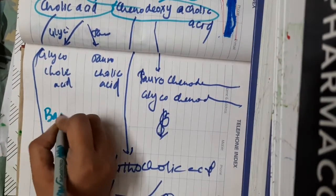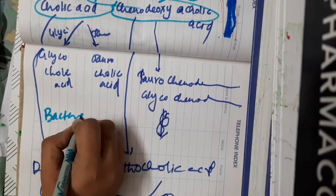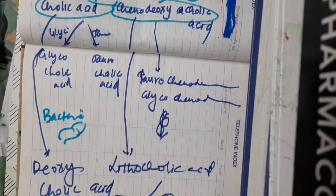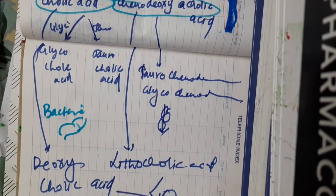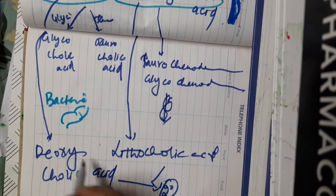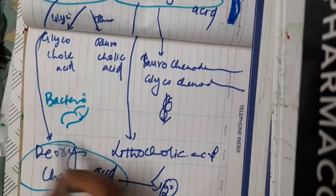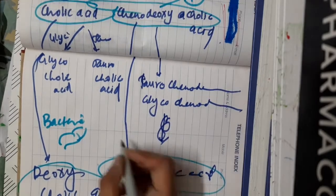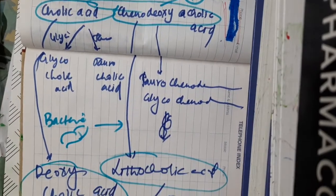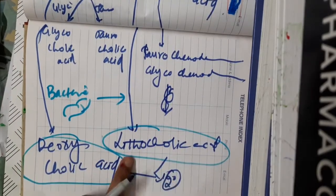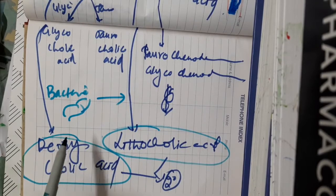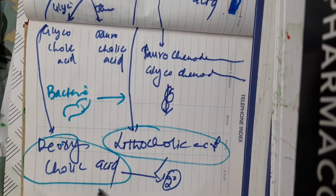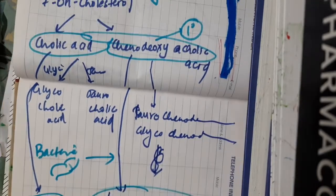Cholic acid in the presence of bacteria in the intestine forms deoxycholic acid, and chenodeoxycholic acid in the presence of intestinal bacteria forms lithocholic acid. Deoxycholic acid and lithocholic acid together are called secondary bile acids.